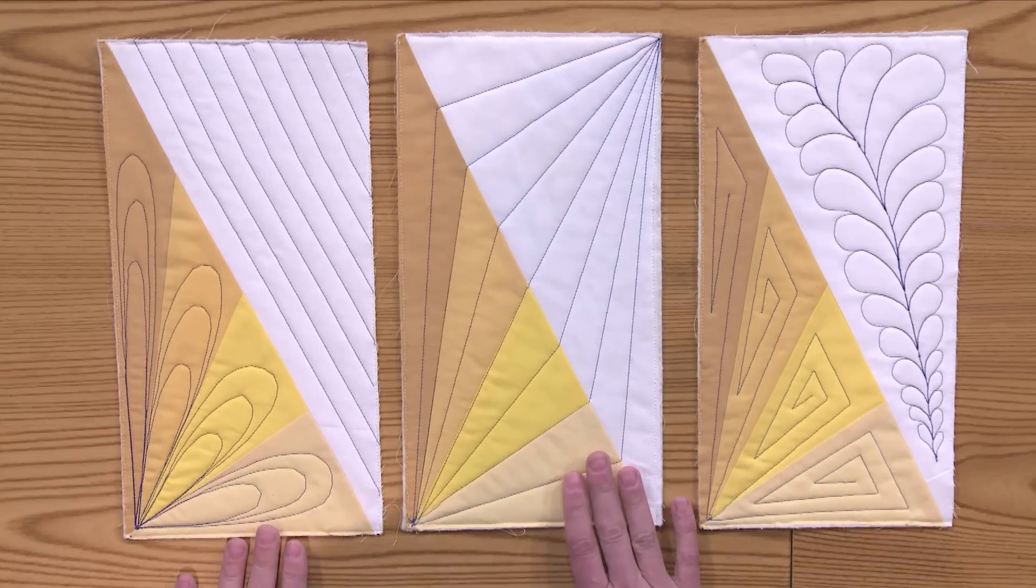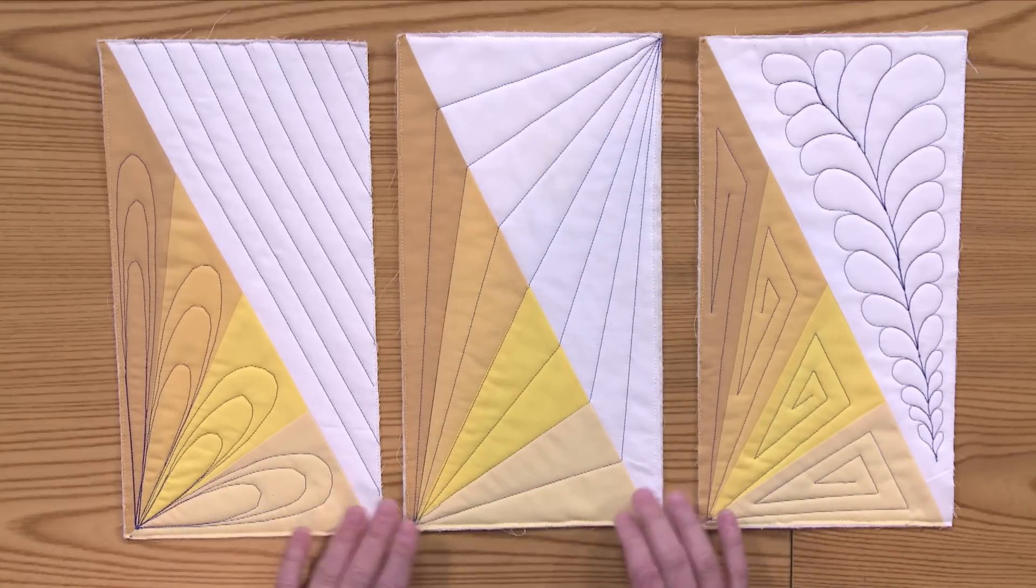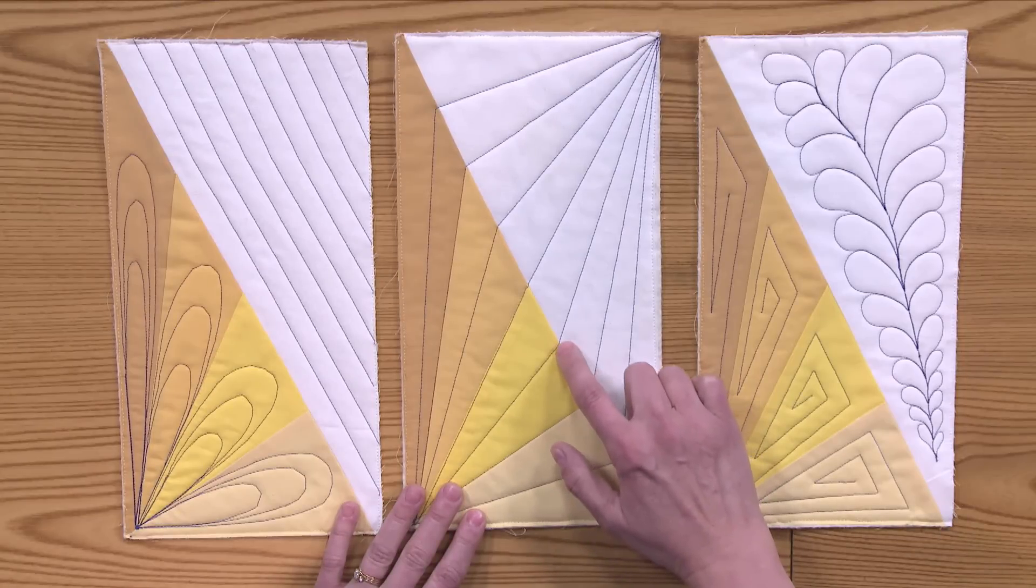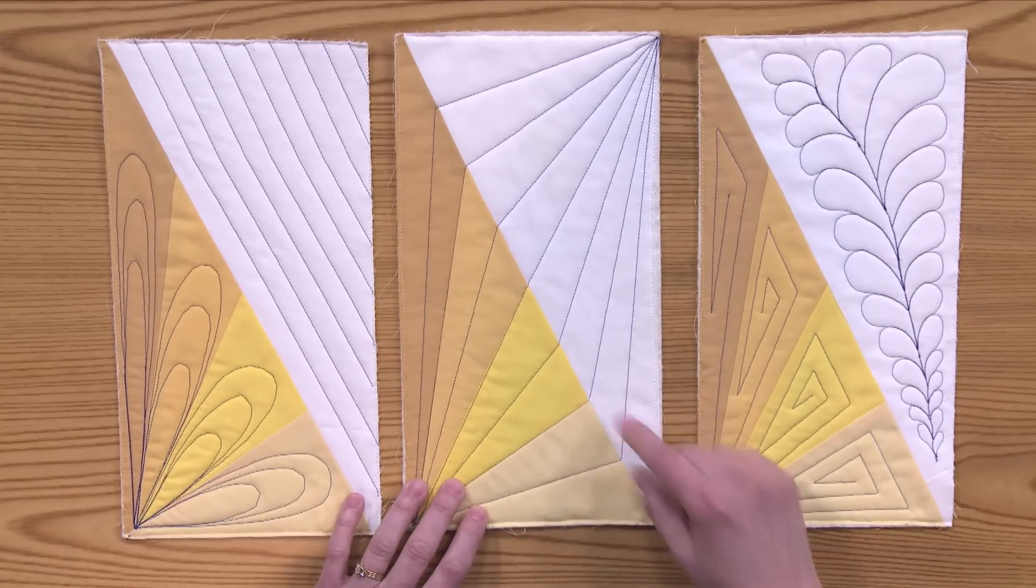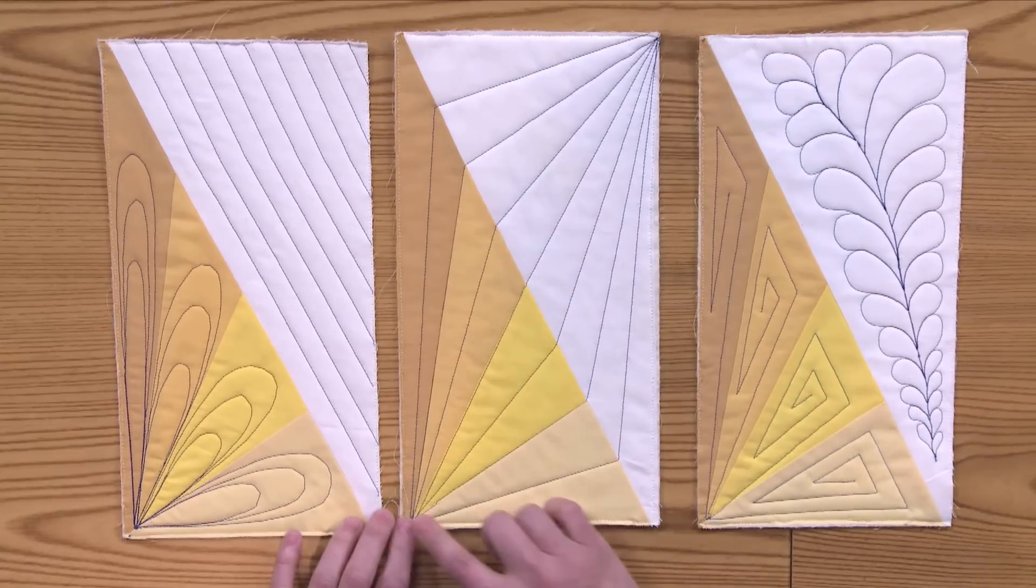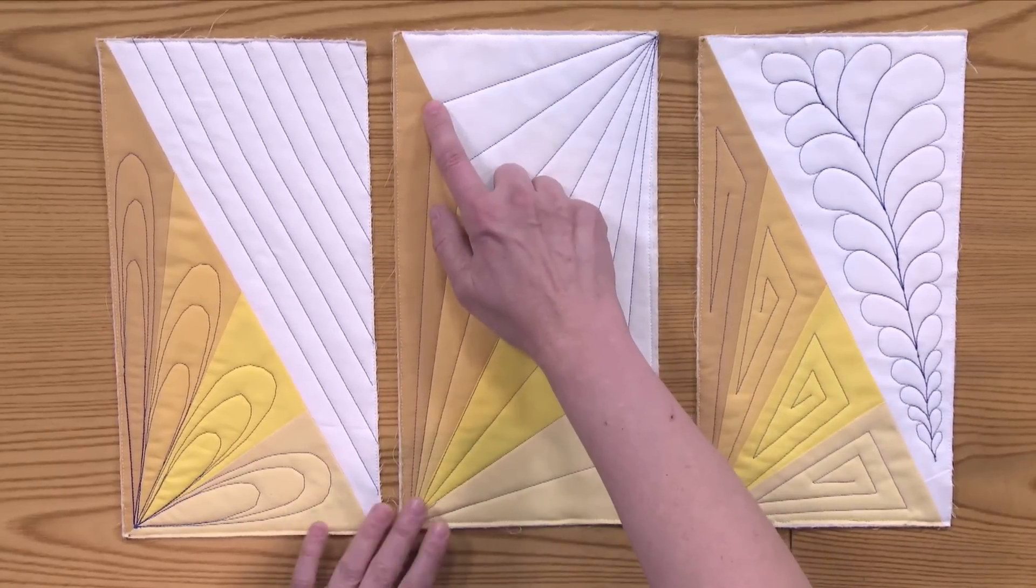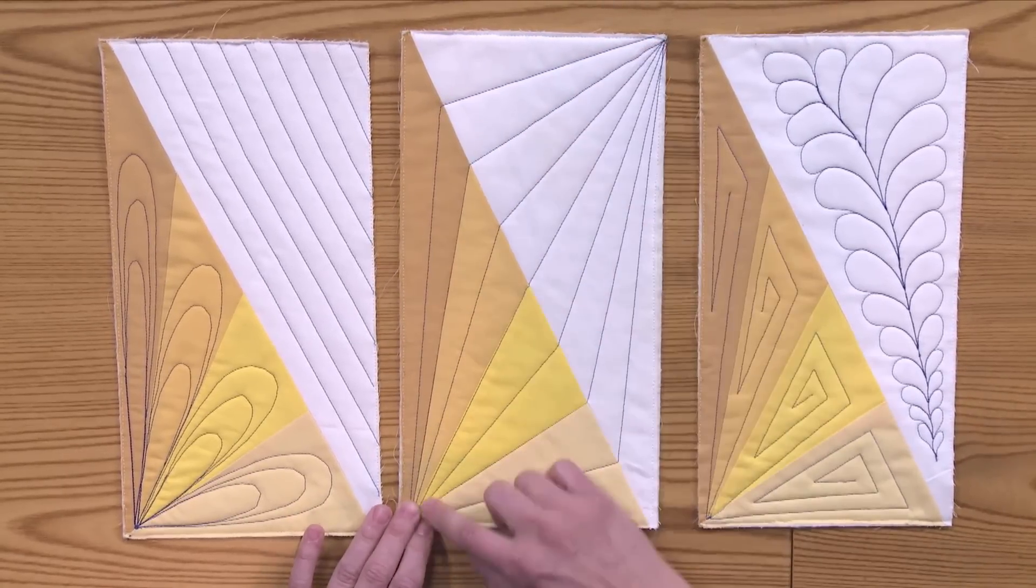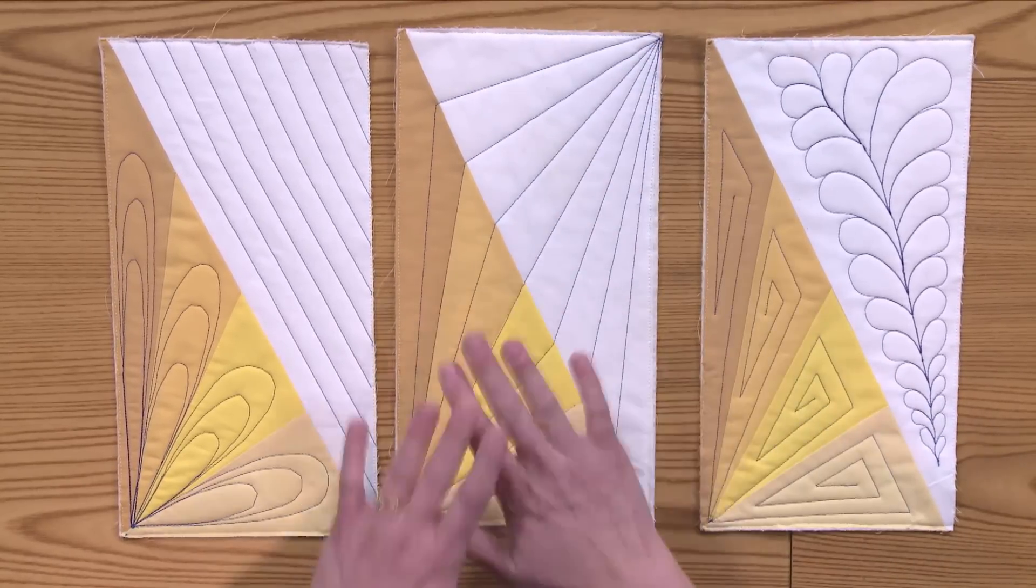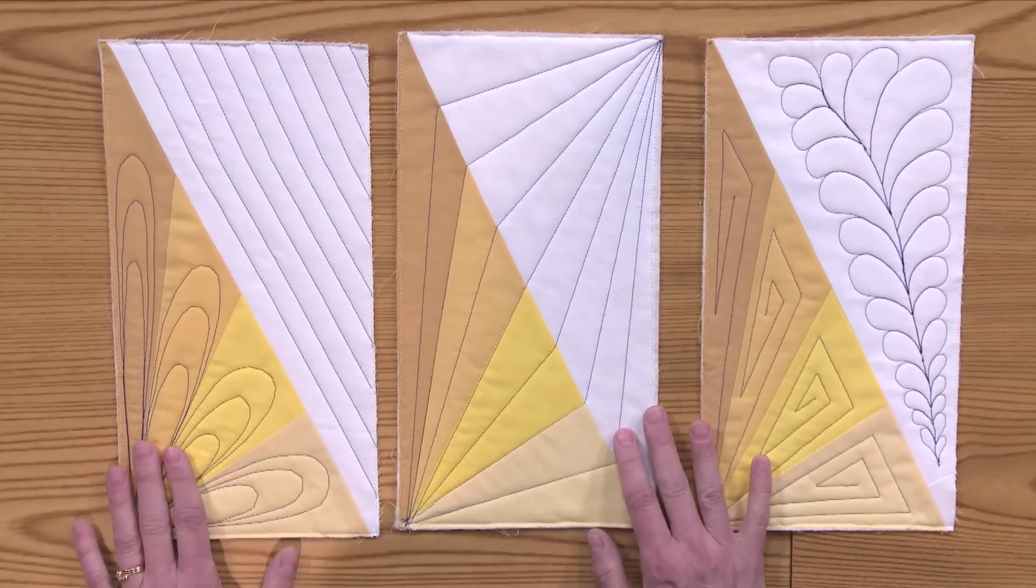In the second block, this is a really fun thing to do, and it really gives a great effect. You can mark little dots with a marking tool. These are about an inch and a half apart across this seam line here, and then just quilt straight lines to each point and then to the corner. And then take your second line to the second point and to the corner. And this gives a really cool radiating effect for this block.